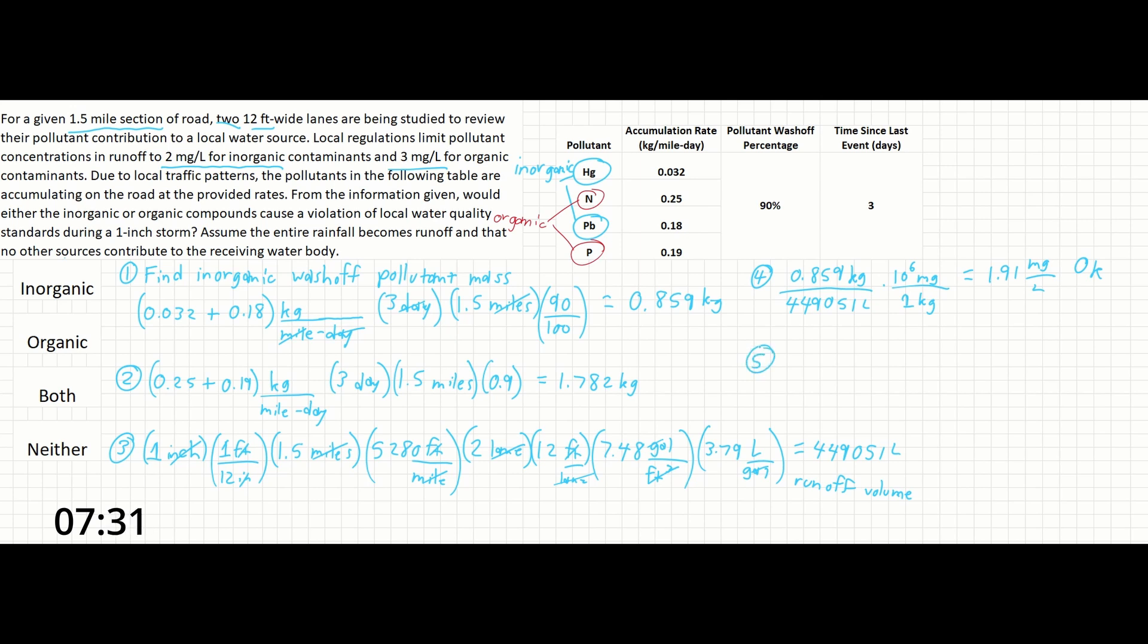For step five, we're going to find the organic concentration. So that's going to be 1.782 kilograms over 449,051 liters, 10 to the sixth milligrams over one kilogram. And this is going to come out to 3.97 milligrams per liter. We can see that this is above the legal limit specified in the problem statement for organic contaminants.